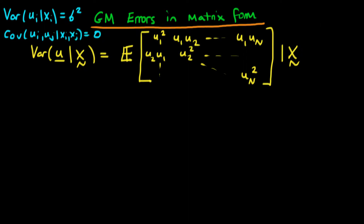In this video I want to continue our discussion as to how we can represent the Gauss-Markov assumptions of homoscedasticity and of no autocorrelation amongst errors in matrix form. At the end of the last video we got that the variance of our random vector u given x was equal to the expectation of this matrix on the right, given that we have our independent variables x.